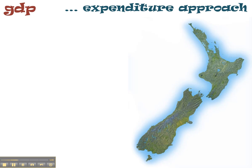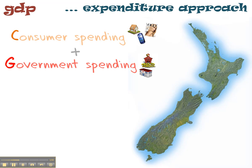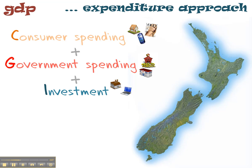To calculate the expenditure approach, we break it into five parts. We have consumer spending — goods like cell phones, magazines, and going to the movies, stuff that we use for our own personal use. There's government spending, things like education, healthcare, and all the other goods and services that the government provides for us. We have investment — that's when firms buy capital goods to produce goods and services, things like factories, computers, trucks, and tractors.